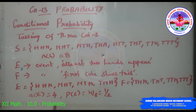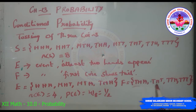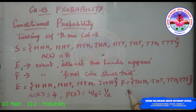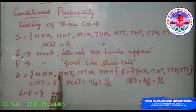F is another event which has already occurred: the first coin shows tail. So the outcomes where the first coin shows tail are THH, THT, TTH, and TTT. So P(F) = 4/8 = 1/2. E intersection F gives the common elements of both events.